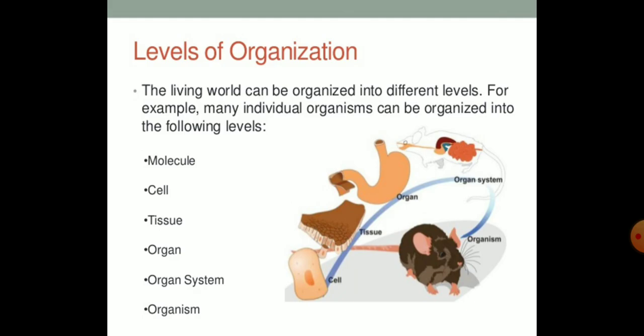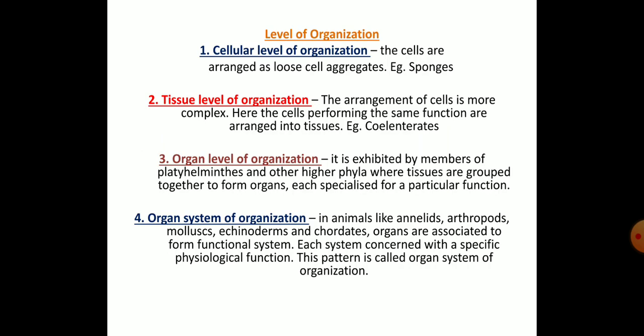This is a very important topic: levels of organization. Our body is made up of minute molecules like DNA, RNA, proteins, lipids, and water. The levels are: molecules → cells → tissue → organ → organ system → organism. At the cellular level of organization, cells are arranged as loose cell aggregates — as seen in sponges, which are made up of a single type of cells.